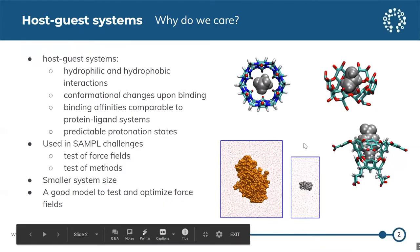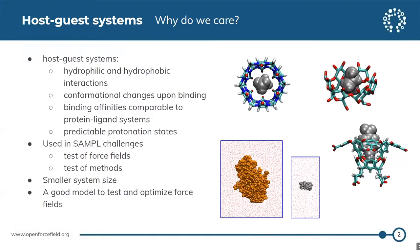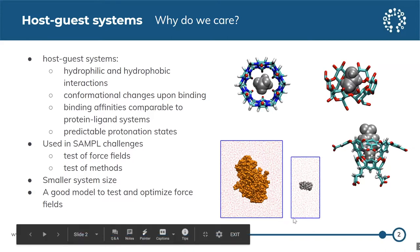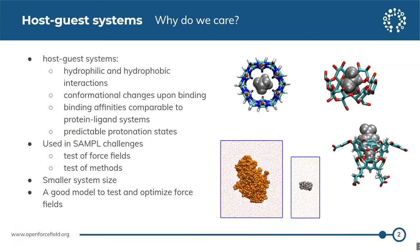Why do we care about host-guest systems when we actually want a force field that will describe protein-ligand systems? Host-guest systems may include both hydrophilic and hydrophobic interactions. Upon binding of the guest molecule to the host, the host may undergo conformational changes. The binding affinities are comparable to some protein-ligand systems, ranging from weak to intermediate. The protonation states of the host can be predicted with high confidence. These systems have also been used in the SAMPL challenges to test force fields and computational methods. Compared to protein systems, they are much smaller, so we can run simulations quicker and longer. We use host-guest systems as a good model to test and hopefully optimize our force field.